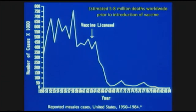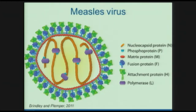Prior to measles vaccination, there were estimated to be 5 to 8 million deaths per year due to measles. With the licensure of the vaccine, there was a dramatic decrease in the number of cases and also the number of deaths due to measles. You'll hear more about the vaccine, but it has had an incredible effect on decreasing the number of cases of this disease.